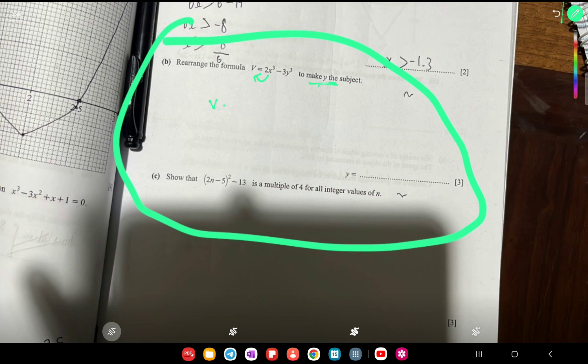v - 2x³ = -3y³. Now we will multiply both sides with -1, so it becomes -v + 2x³ = 3y³.